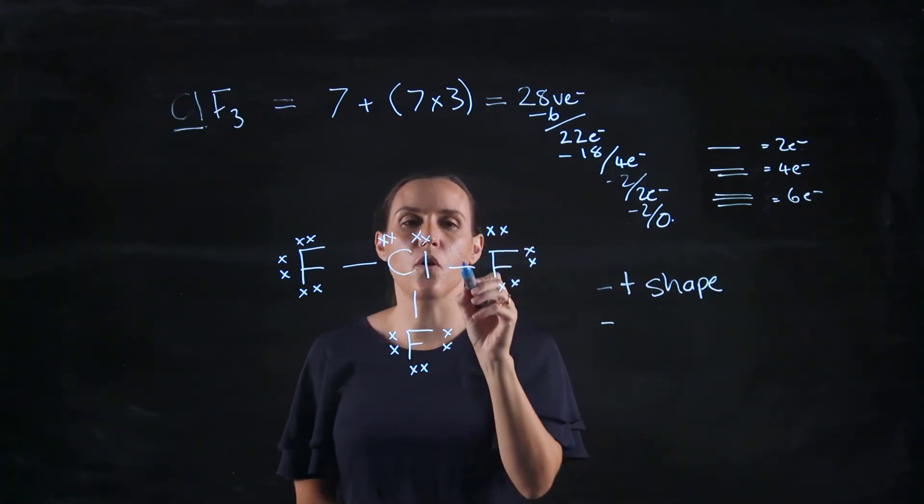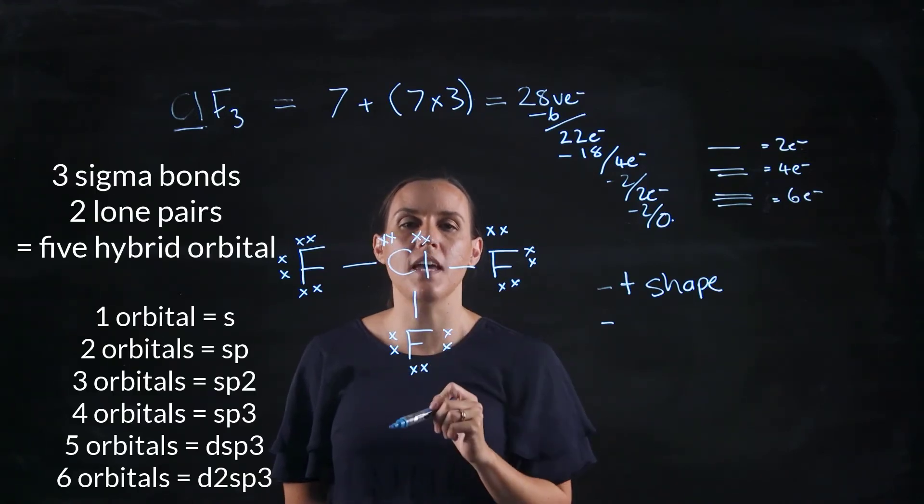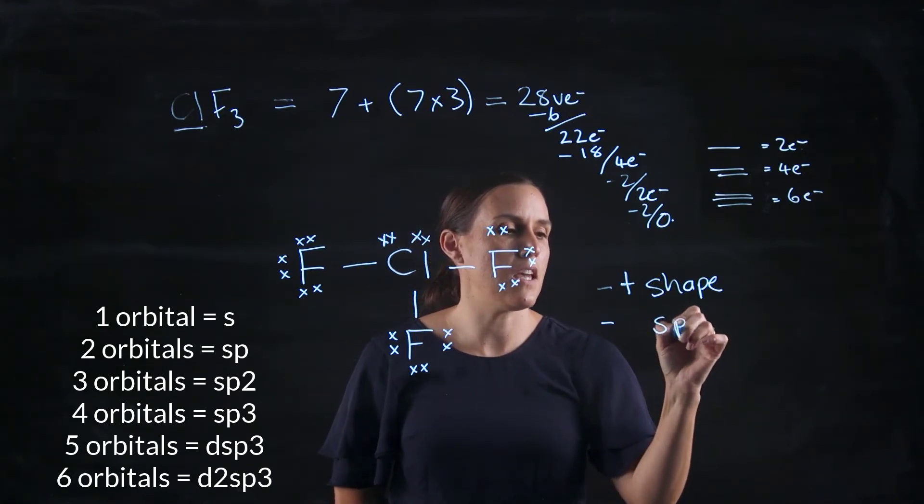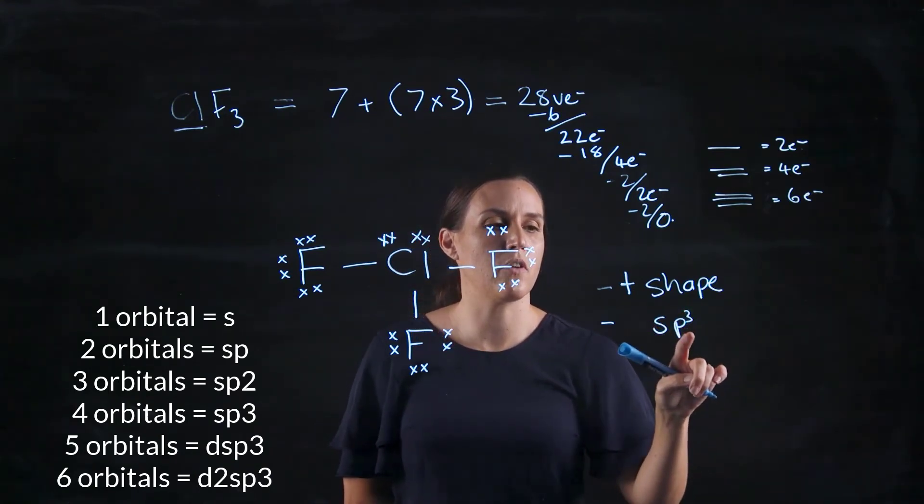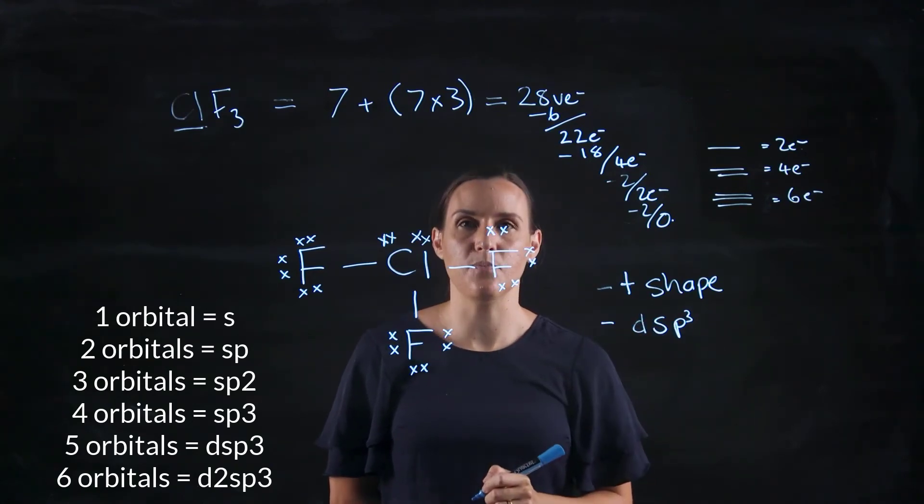Now the hybridization, we've got one, two, three sigma bonds and one, two lone pairs. So we've got one, two, three, four, five in total. So we've got S, P three, which would be three, four. But we need one more. So it's D, S, P three.